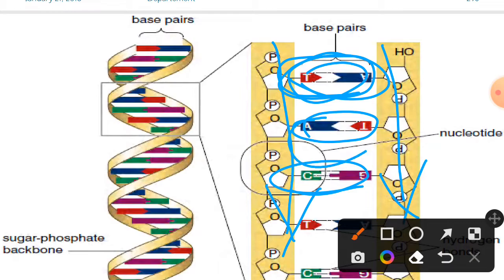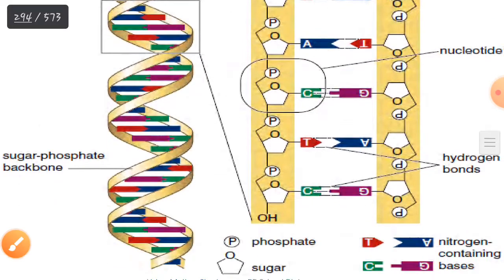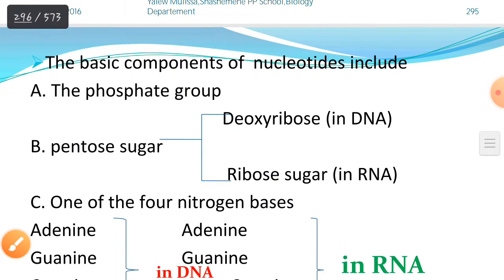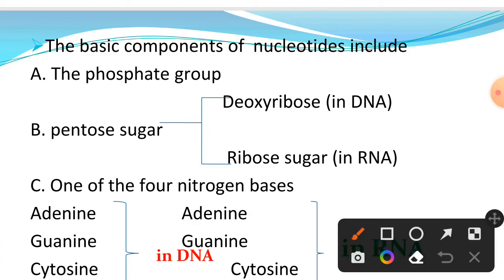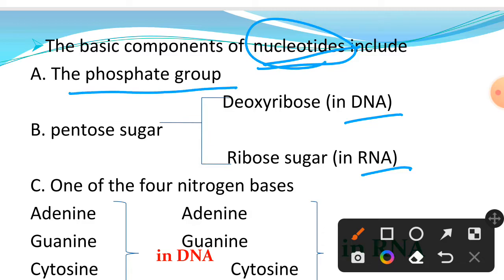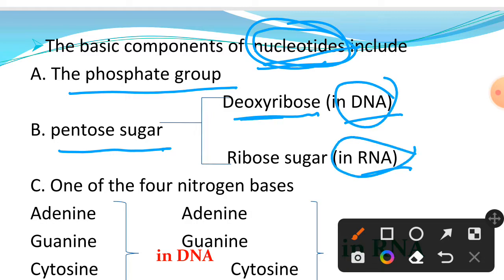The middle rungs, or steps, are made from organic bases — also called nitrogen bases. The basic components of a nucleotide are: the phosphate group, the pentose sugar, and one of the four nitrogen bases. For DNA, the sugar is deoxyribose.